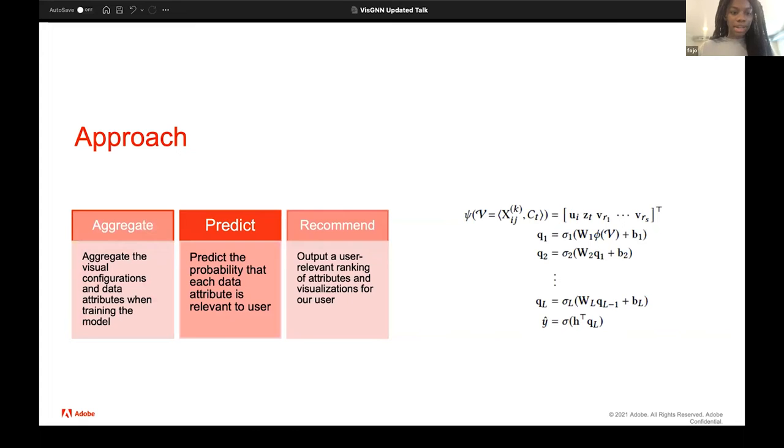Next, we predict. We generate a visualization score and we predict the probability that each data attribute is relevant to the user. So essentially, we actually broke this down into smaller steps. We first looked at the probability of the visual configuration and the probability of the data attributes fitting what the user wanted. And then we used that to come up with the Y hat, which is the visualization score that we gave the visualization for user i. So that is the prediction step.